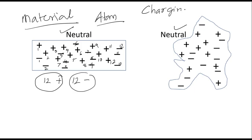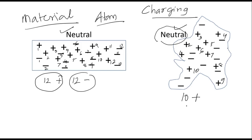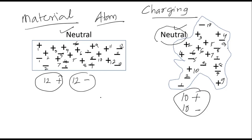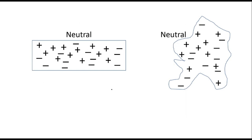Now, these two materials are neutral. This is the same with any two objects in nature until and unless we rub them against each other. When we rub both materials against each other, some of the negative charges will move — either from one material to the other, depending on the nature of the material. Why do negative charges move? Because in an atom, positive charges and neutrons are firmly packed and don't easily move, but electrons are already moving and are farther away, so they tend to move outside.